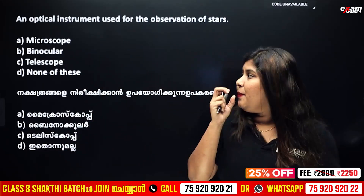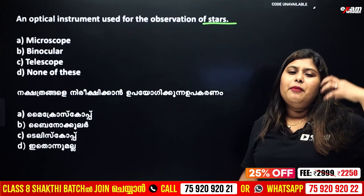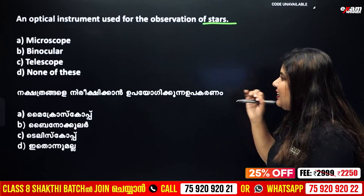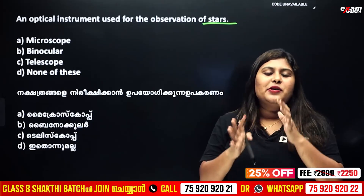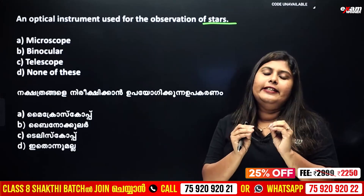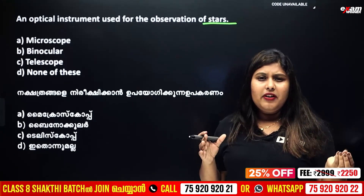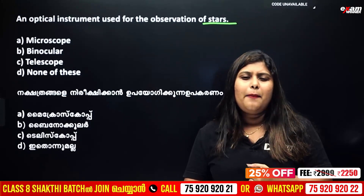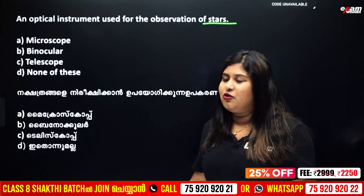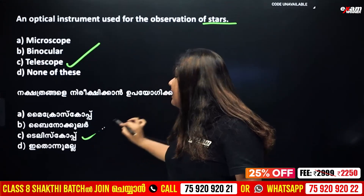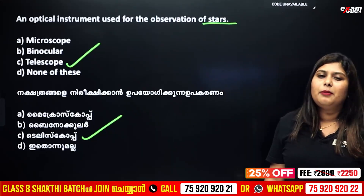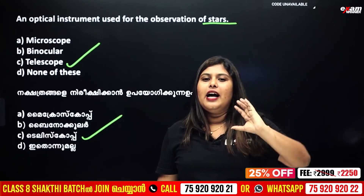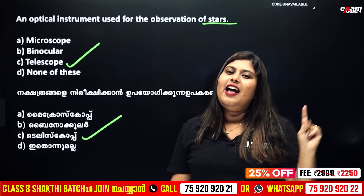An optical instrument used for observation of stars — we know that stars are very far away. For very minute objects, we use the microscope. For stars, we use the telescope. You can also use binoculars. That's why we need a telescope to observe stars.